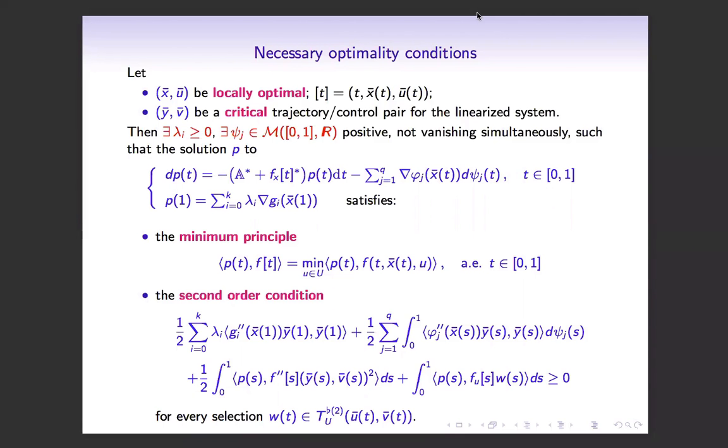In order to state the main results, without entering into details, let x-bar and u-bar be locally optimal for the Meijer problem, and let y-bar, v-bar be a trajectory control pair for the linearized control system, such that y-bar is critical for the cost.